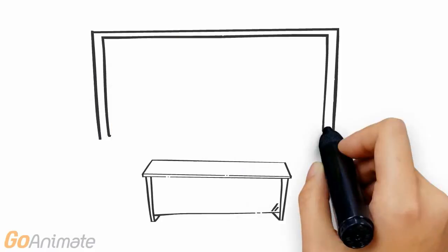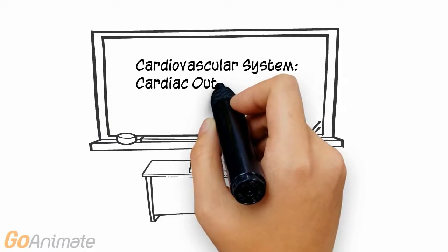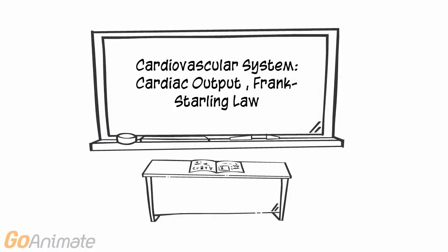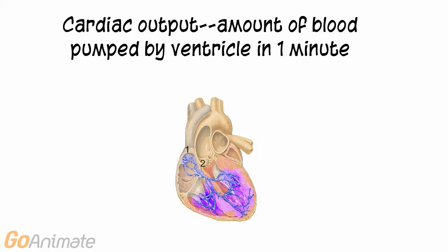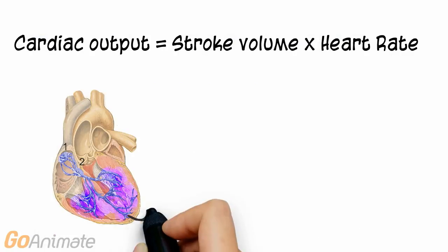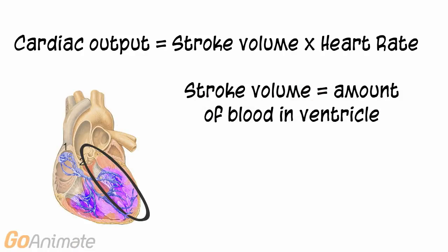Let's learn about cardiac output and the Frank-Starling law of the heart. Cardiac output is the amount of blood pumped through one of the ventricles of the heart in one minute. Cardiac output is equal to the stroke volume times the heart rate.